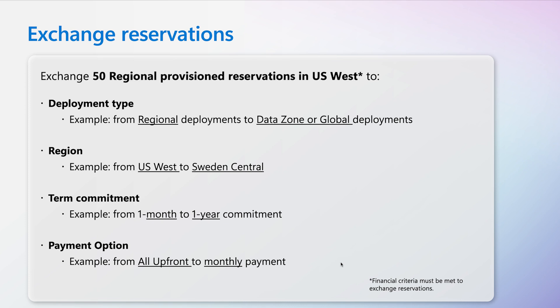Could you give us an example of how this might work in practice? Absolutely. Let's say a customer has purchased a 50 regional provisioned reservation in US West. They would have several options for exchanges as long as they meet the financial criteria. For instance, they could exchange to 50 regional data zone or global provisioned reservations in the same US West region, or move to a different region altogether — say, 50 data zone or global provisioned reservations in Sweden Central. Or they could keep the same deployment type and region and exchange their commitment from one month to one year.